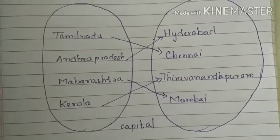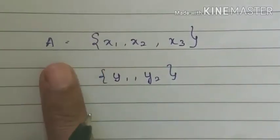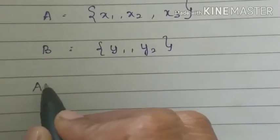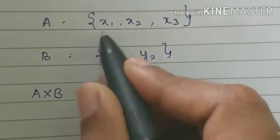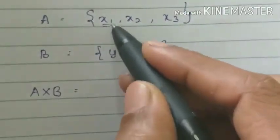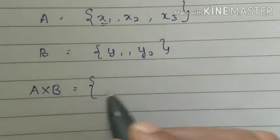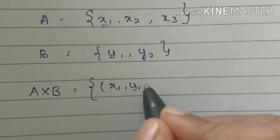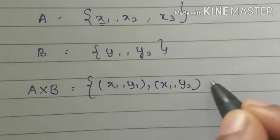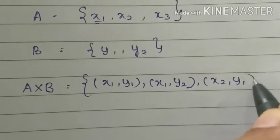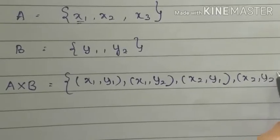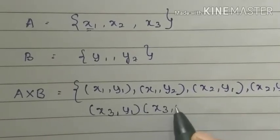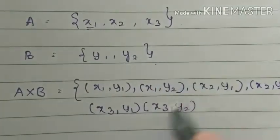Now we have two sets. First set A is x1, x2, x3. Second set B is y1, y2. We have to find A cross B. So A cross B gives us the ordered pairs: (x1,y1), (x1,y2), (x2,y1), (x2,y2), (x3,y1), (x3,y2). There are 3 elements in A and 2 elements in B, so 3 times 2 gives 6 ordered pairs.